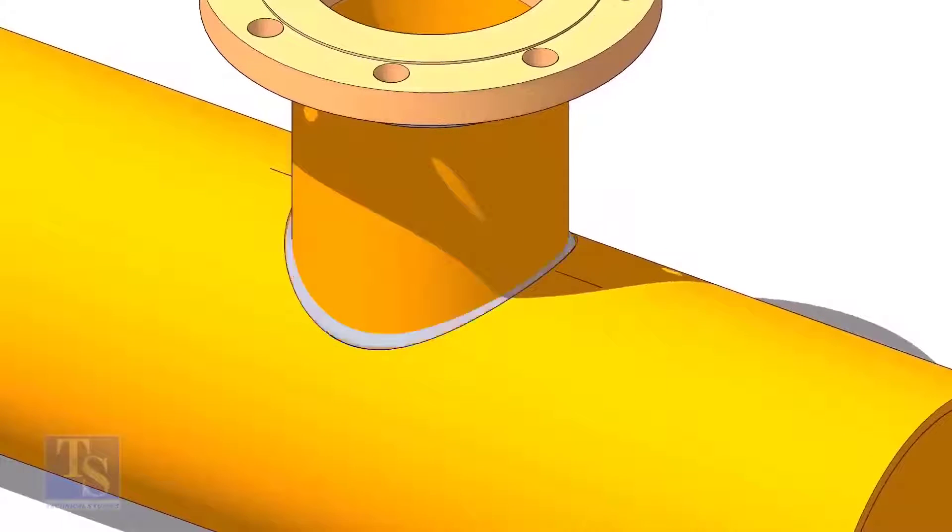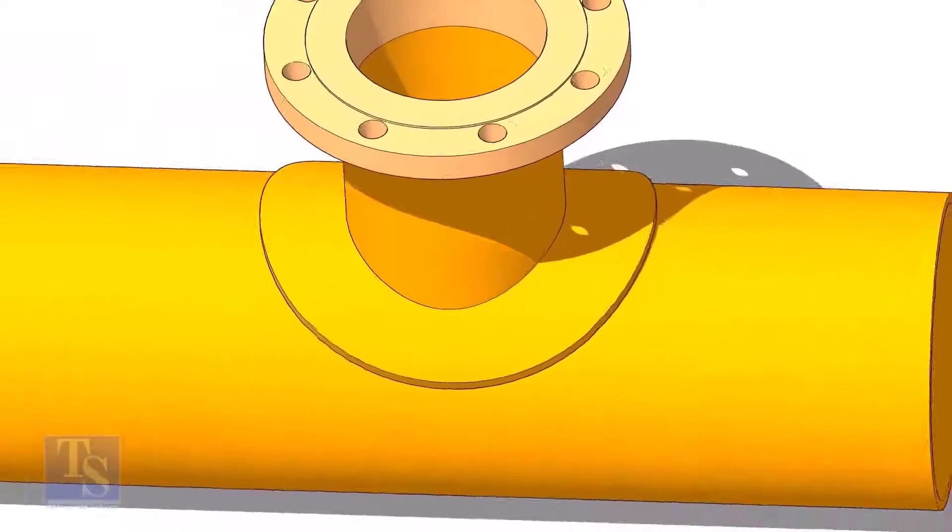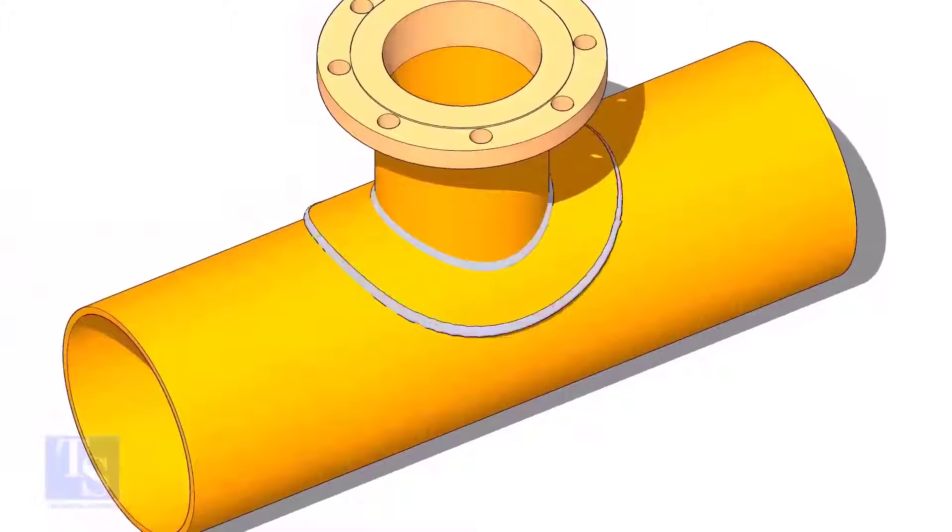A reinforcement pad or RF pad is used to strengthen the fabricated or welded pipe branch connection joints.